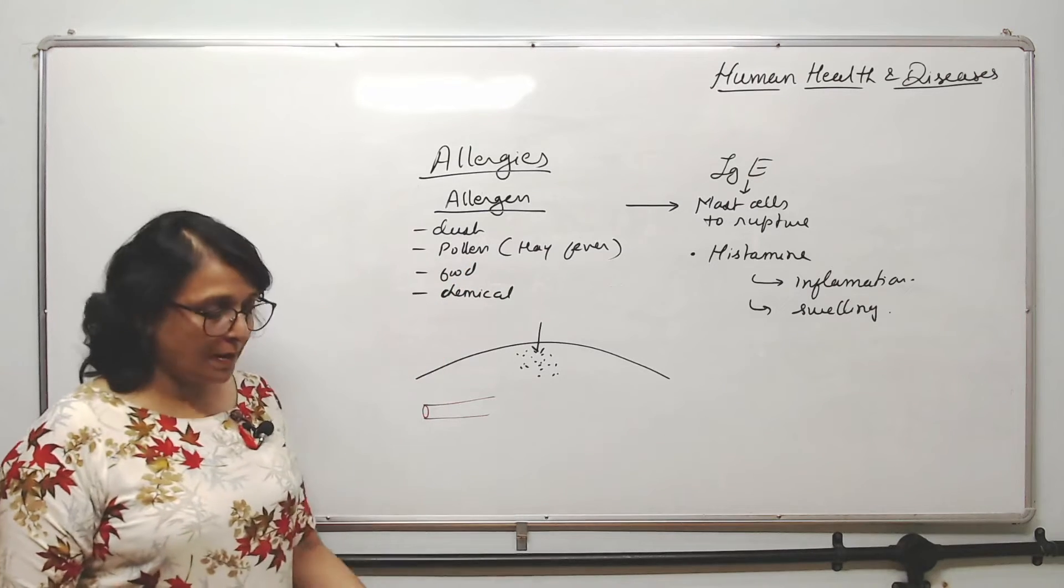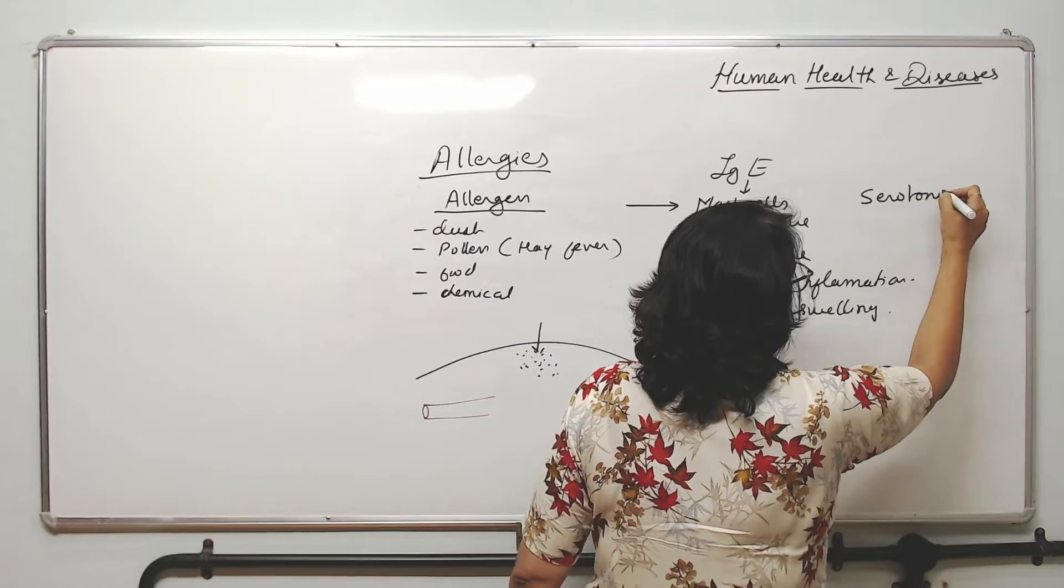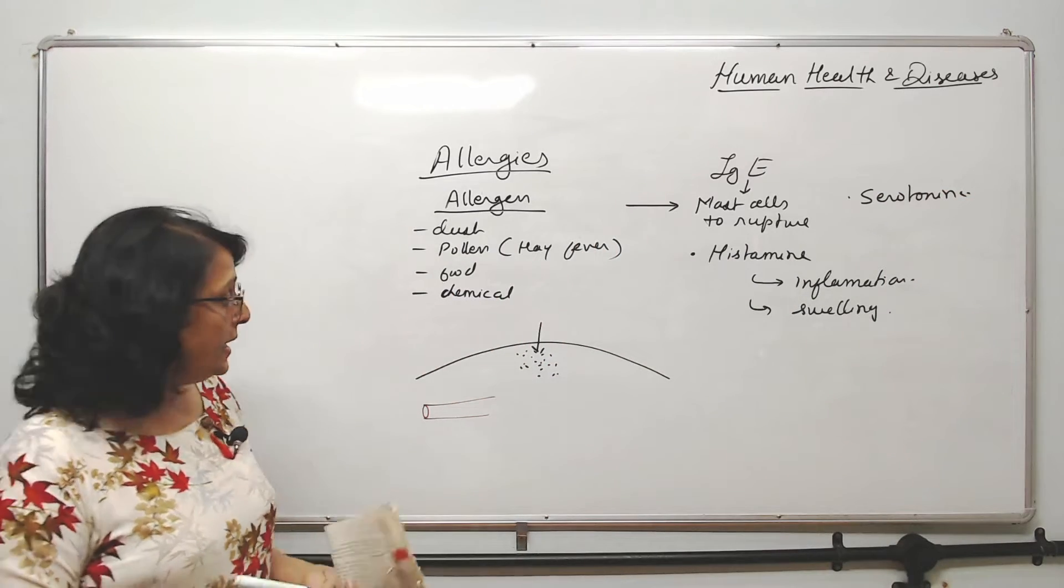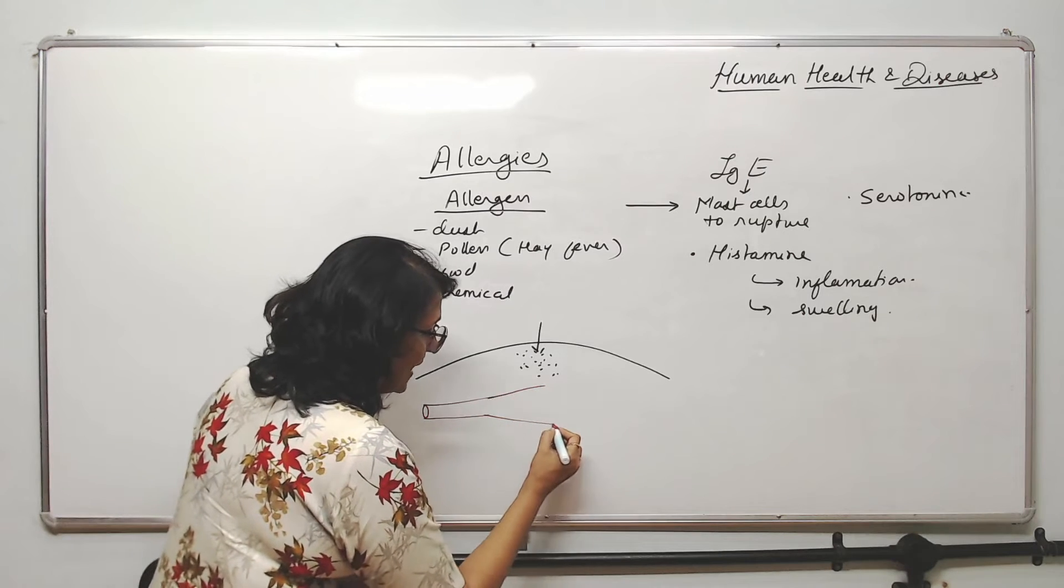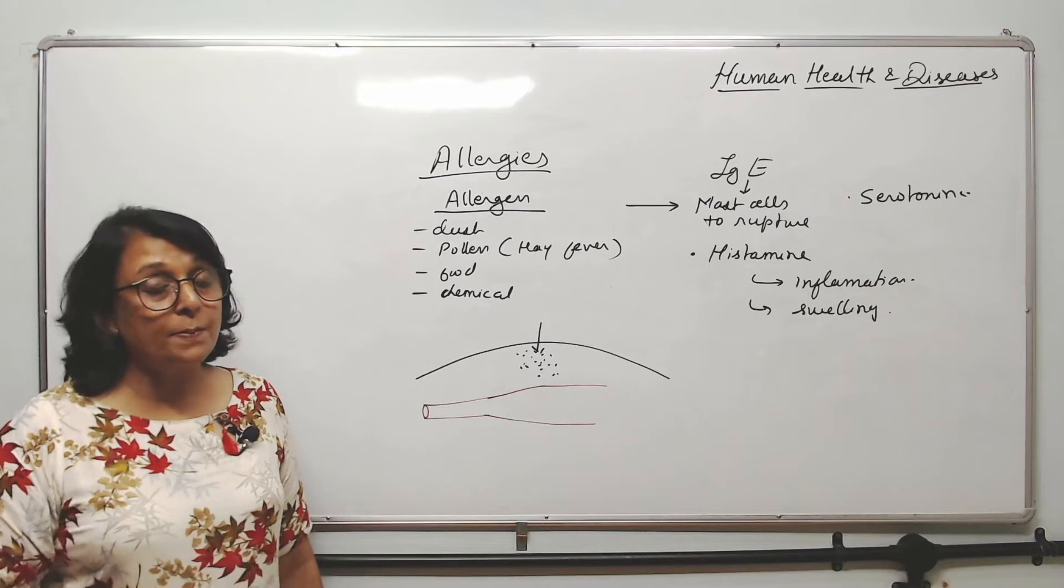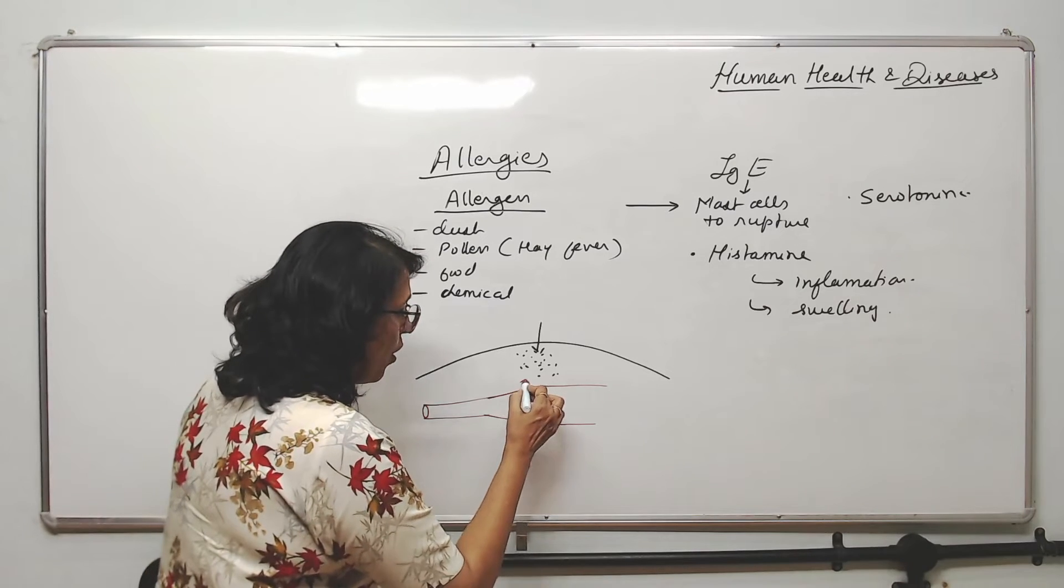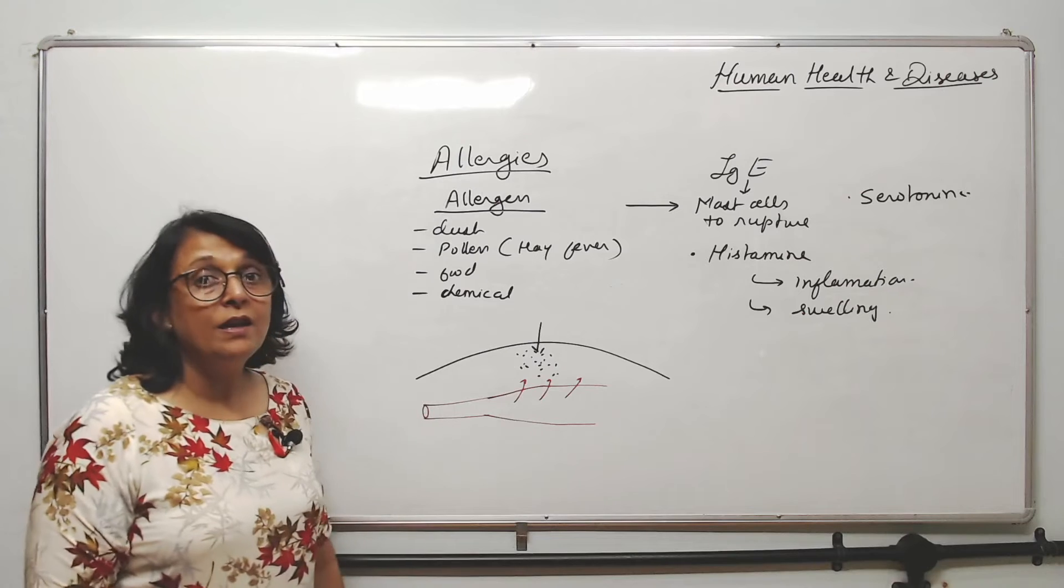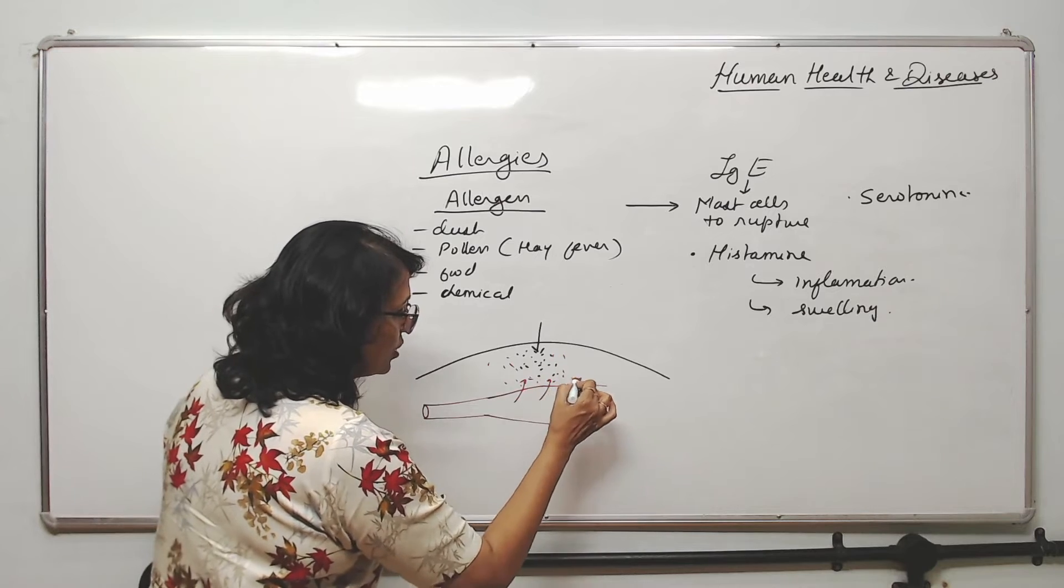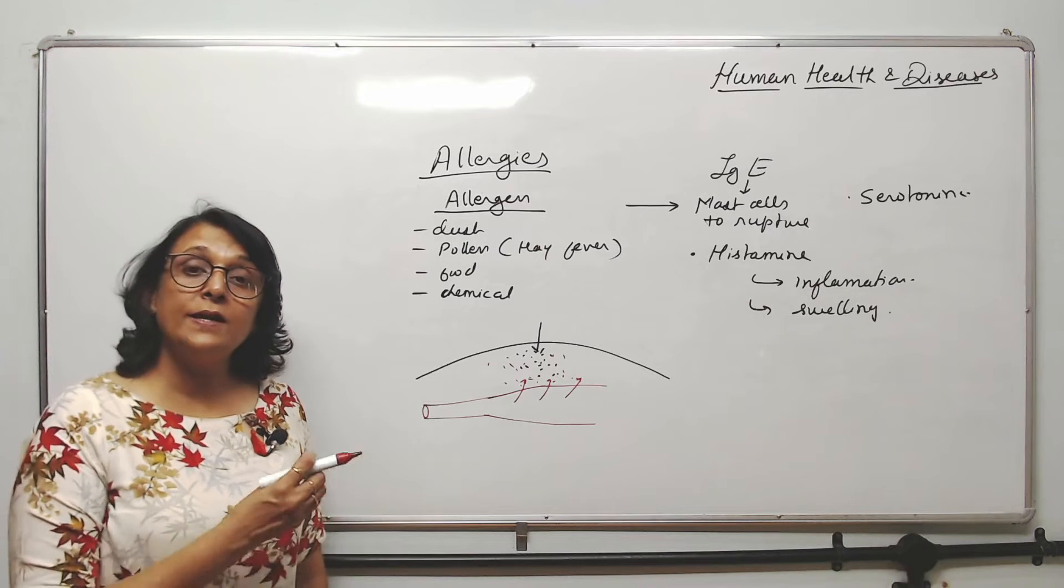When mast cells rupture, serotonin is also released. Here this serotonin acts as a vasodilator. It causes these blood vessels to dilate like this. If the blood vessels dilate, that means there is more and more blood supply to this area. If there is more blood supply, more of the fluid lymph will get filtered out. That means here there is going to be accumulation of fluid. And that is why there is swelling. That is why there is inflammation.